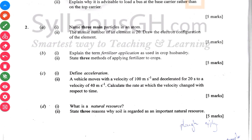So name three main particles in an atom — subatomic particles, that's what you are being asked. So we have the neutrons, the electrons, and then the protons.